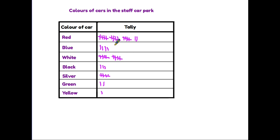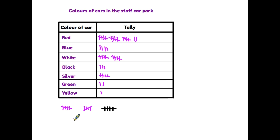Remember each little gate counts for five. So with red cars we have five, ten, fifteen, plus two on the end, is seventeen. Blue we only have four. White we have ten. Black is three. Silver we have five and two and one. By grouping them into fives it makes it very easy for us to count, and that is how we complete a tally chart.